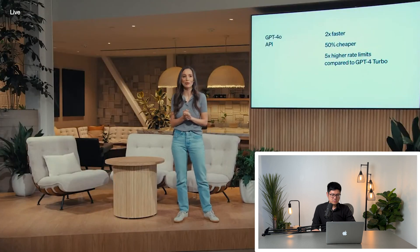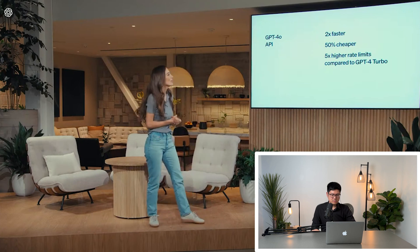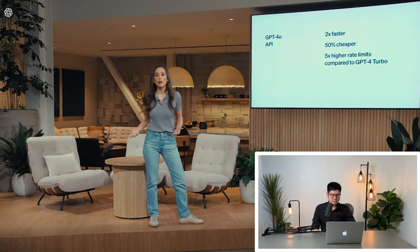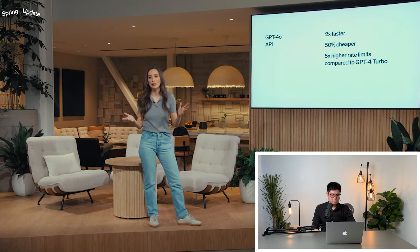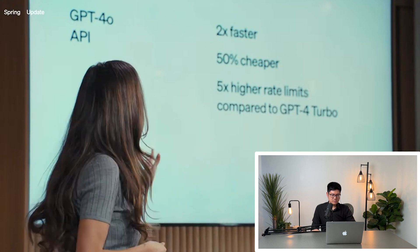GPT-4o is not only available in ChatGPT — they're also bringing it to the API. Developers can start building today with GPT-4o: it's 2x faster, 50% cheaper, and 5x higher rate limits compared to GPT-4 Turbo. GPT-4 was roughly $50 per million tokens; GPT-4o is about $20, so it's about half — but it's still going to cost a lot. Also, OpenAI's API is very unstable — sometimes it slows down, sometimes it's fast, so quality is not predictable. You can't really use OpenAI as your production-level back-end API software. If you want to use it in production, use it on Azure because Azure has a more stable API and higher rate limits, but I don't think GPT-4o is on Azure yet.